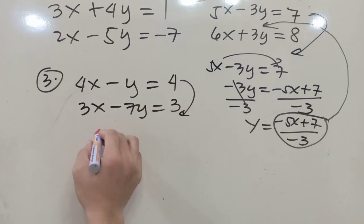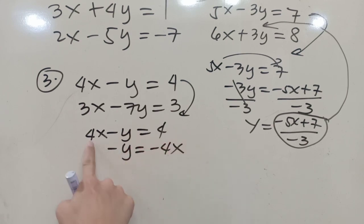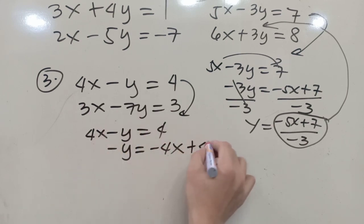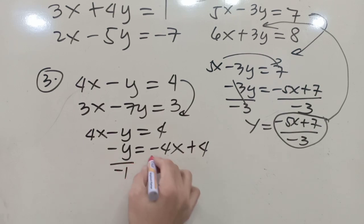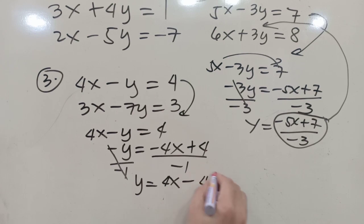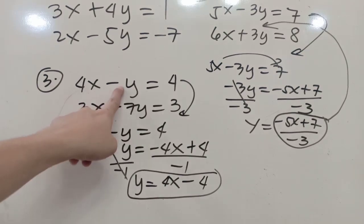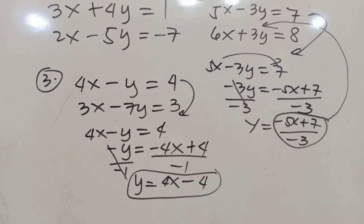When one variable has a numerical coefficient of 1, you can use either elimination or substitution. For example, in 4x minus y equals 4, solving for y gives y equals 4x minus 4, which is clean — no fractions. So substitution is practical here. In summary, use elimination when all coefficients are greater than 1, and use either method when one coefficient is 1.